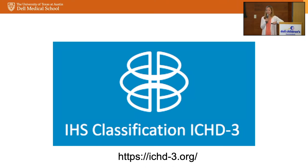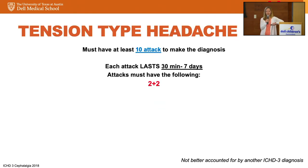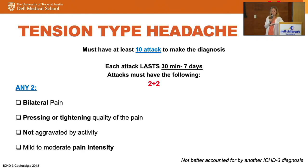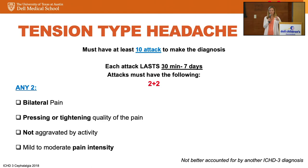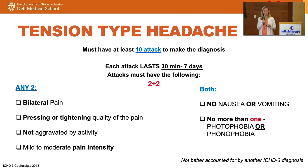I want to talk about the two most common primary headache disorders. First, tension-type headache. To make this diagnosis, patients need at least 10 attacks in their life, lasting anywhere between 30 minutes and seven days. You need two-plus-two: bilateral pain, pressing or tightening quality, not aggravated by physical activity, and mild to moderate intensity. These kids will report headache but can still do whatever they want — it doesn't slow them down. For associated symptoms, it cannot have nausea or vomiting, and no more than one of either photophobia or phonophobia.